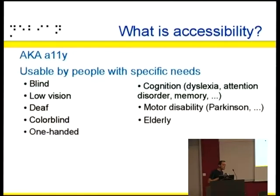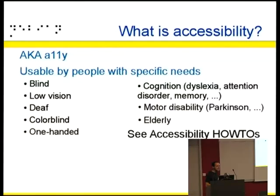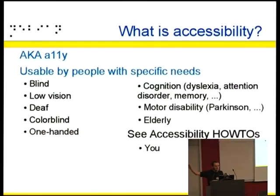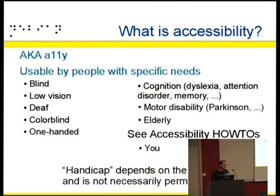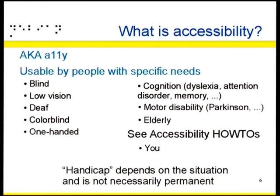And elderly people who basically have everything at the same time. There are some how-tos which provide more information about all of these in detail. The important thing to understand is that maybe it's you — maybe not now, maybe in 20 years, maybe next week you may break your arm and then you have only one hand. So accessibility is not just handicap, because handicap depends on the situation and on the time.